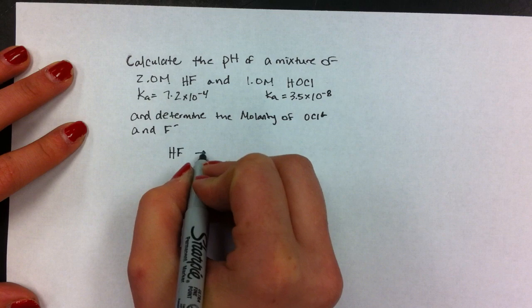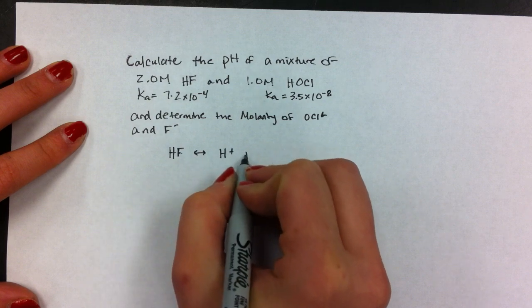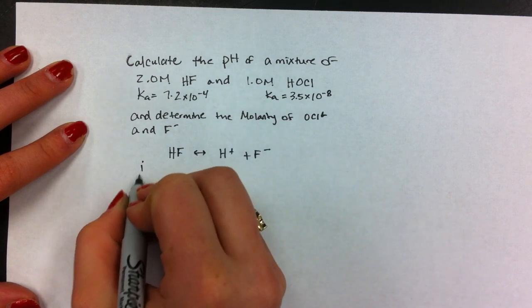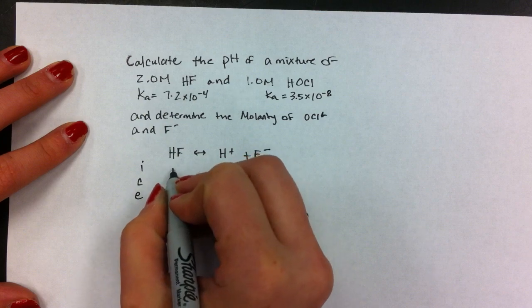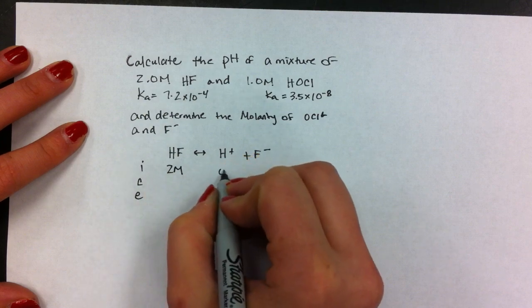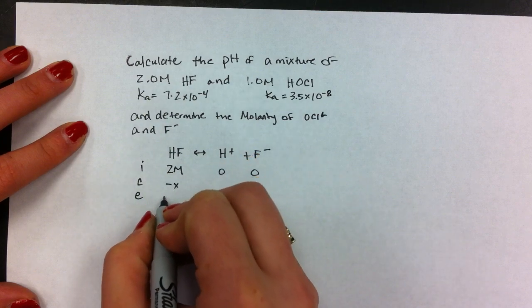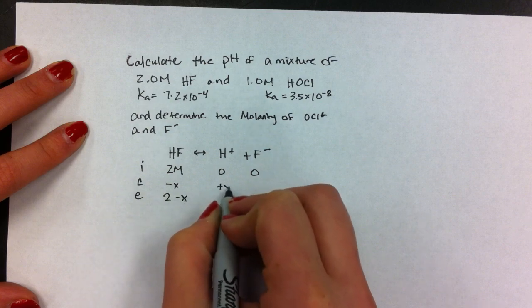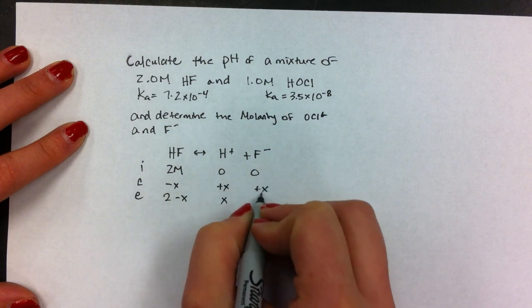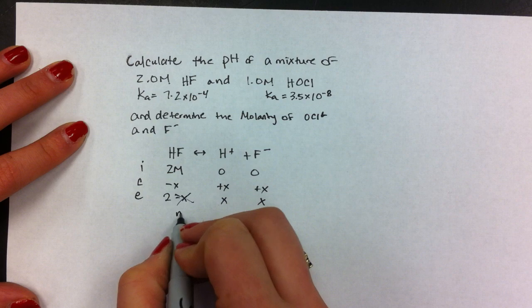We write the equation and ICE it out. We have two molar of this, zero and zero, minus X, plus X, plus X, and neglect.